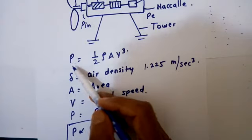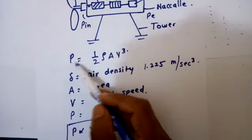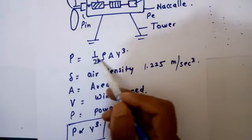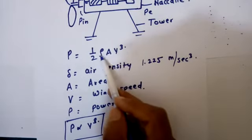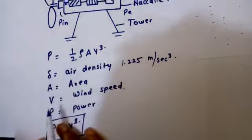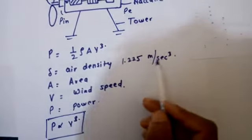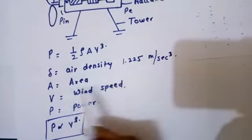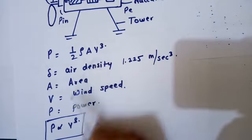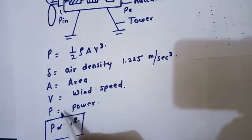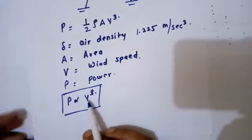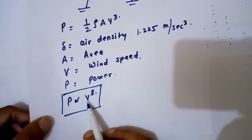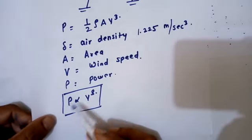Here, ρ is the air density. Its value is constant: 1.225 kg/m³. A is the area, and V is the wind speed. We can see here the power is always proportional to cubic speed. If power is doubled, then speed will be eight times.